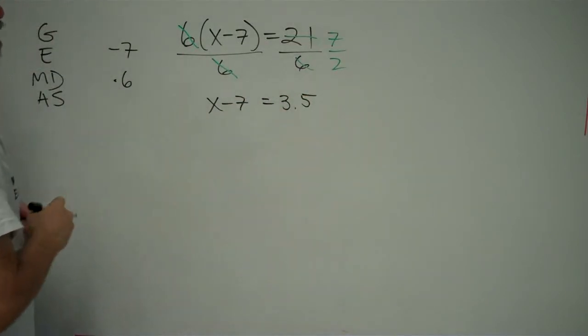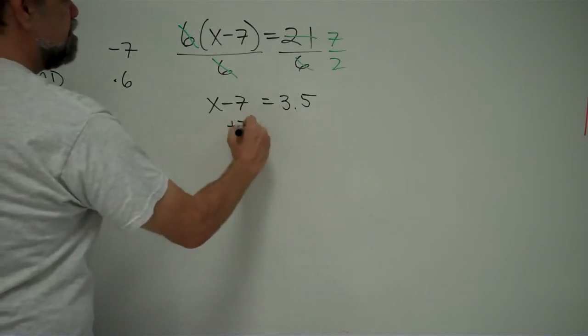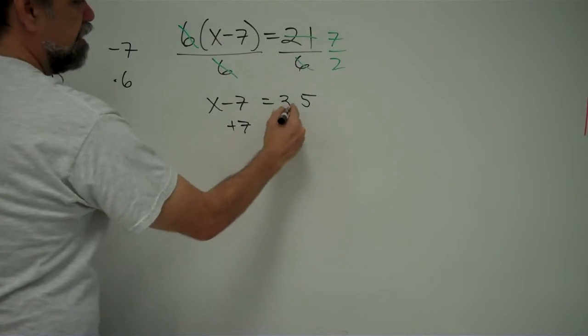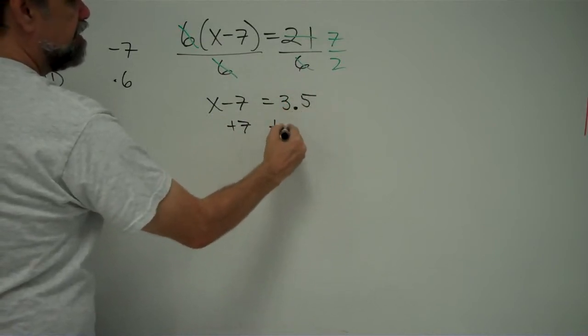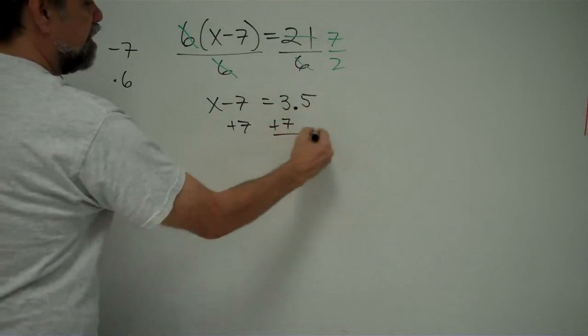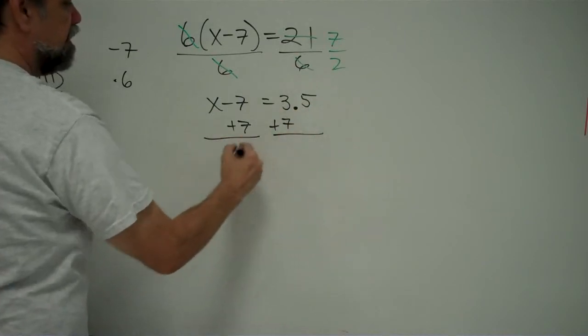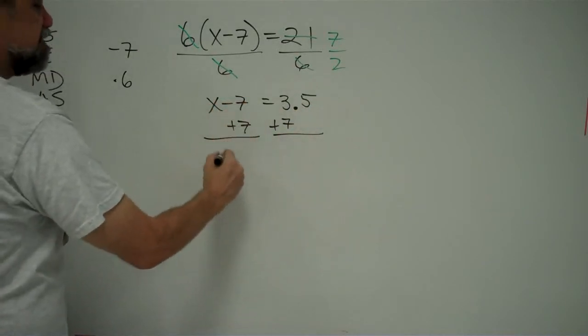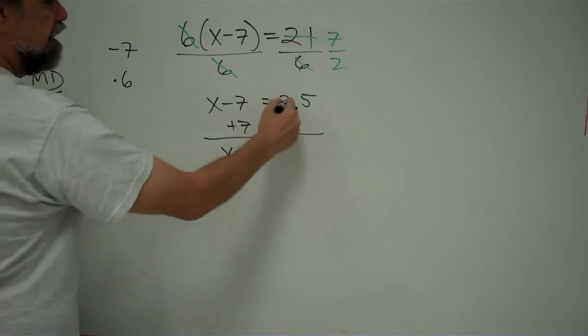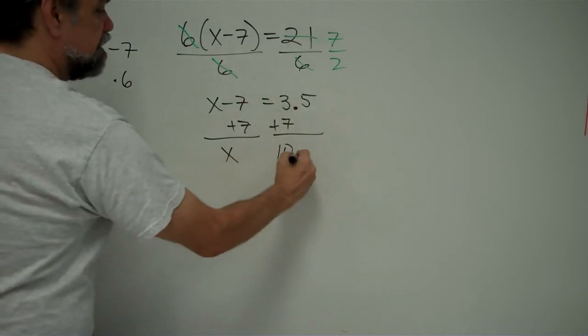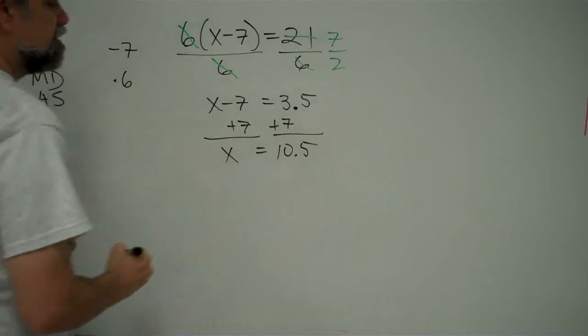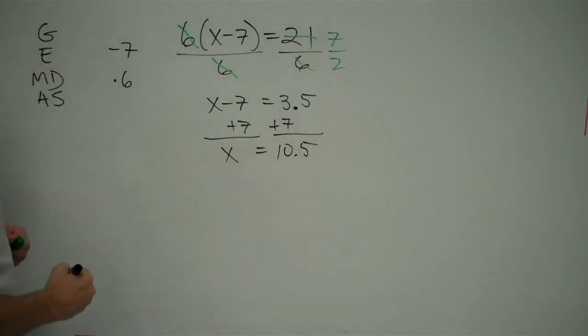Now, I have x minus 7 equals 3.5. I think I know what to do. I have a minus 7. That means I'm going to undo this by adding 7 to it. Careful when you're adding 7 here. You have the decimal point. So, let's put that 7 right there, not under the 5. And I get x minus 7 plus 7, which is simply x. And over here, I have 3.5 plus 7, which is 10.5. Don't forget the equal sign. x equals 10.5.